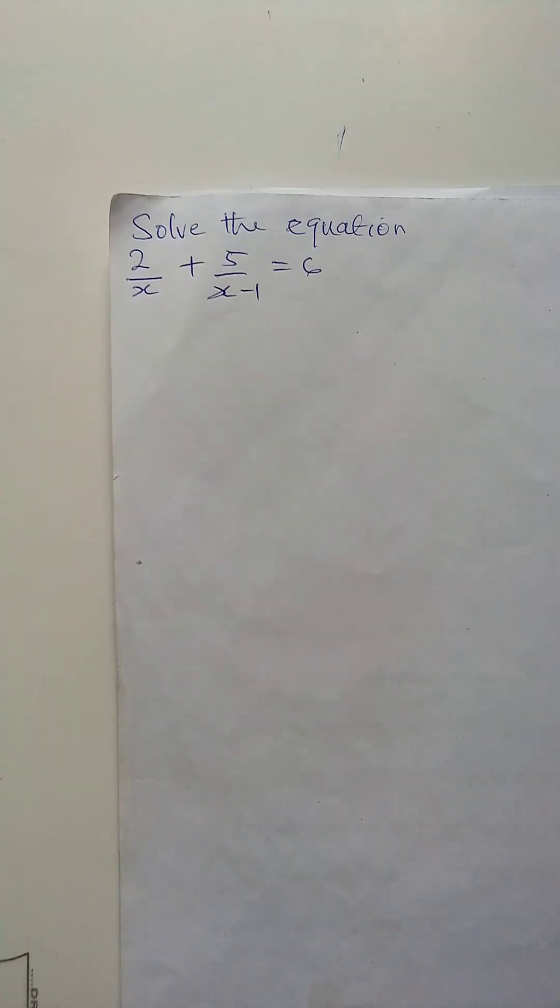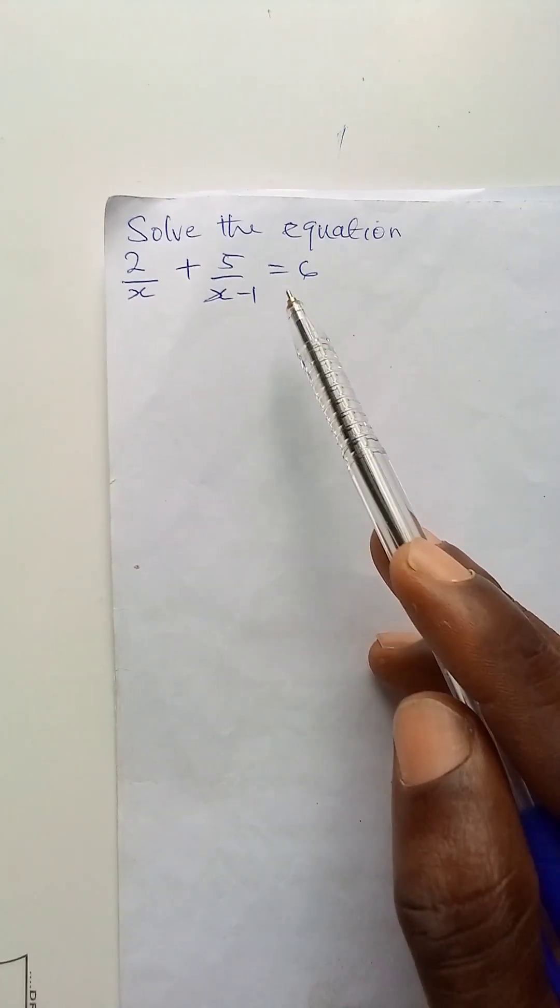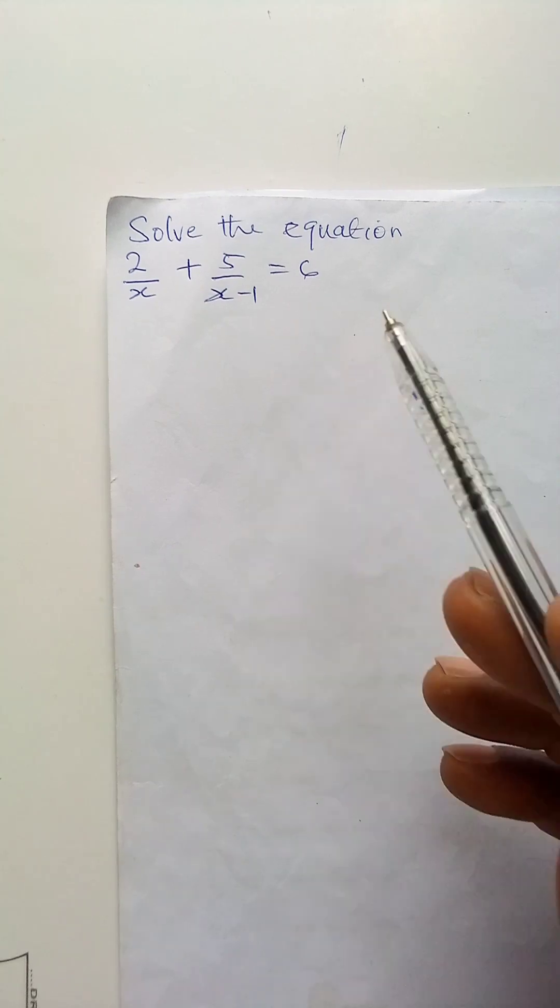Welcome to my channel. In today's video, I will solve the equation 2 over x plus 5 over x minus 1 is equal to 6.